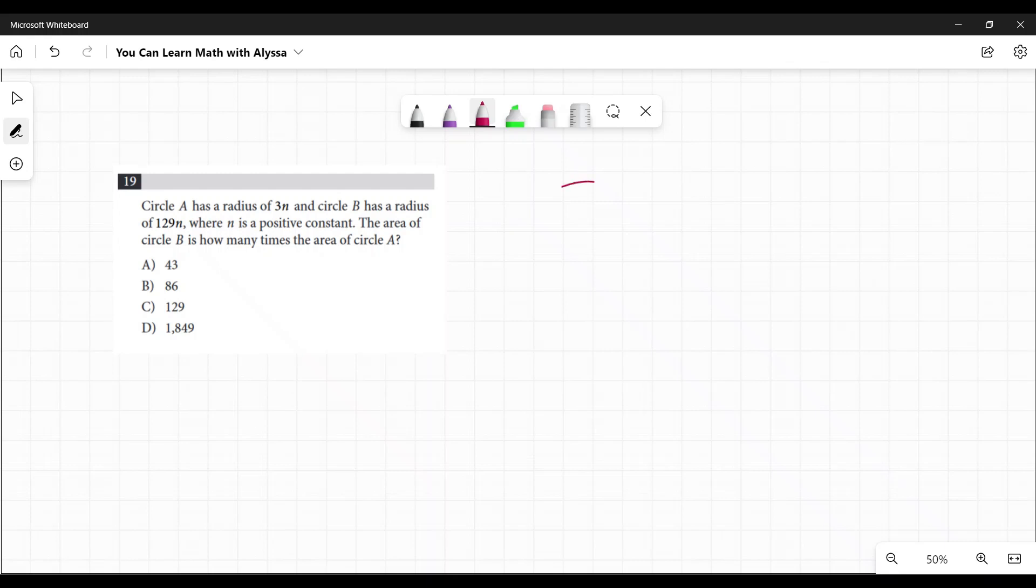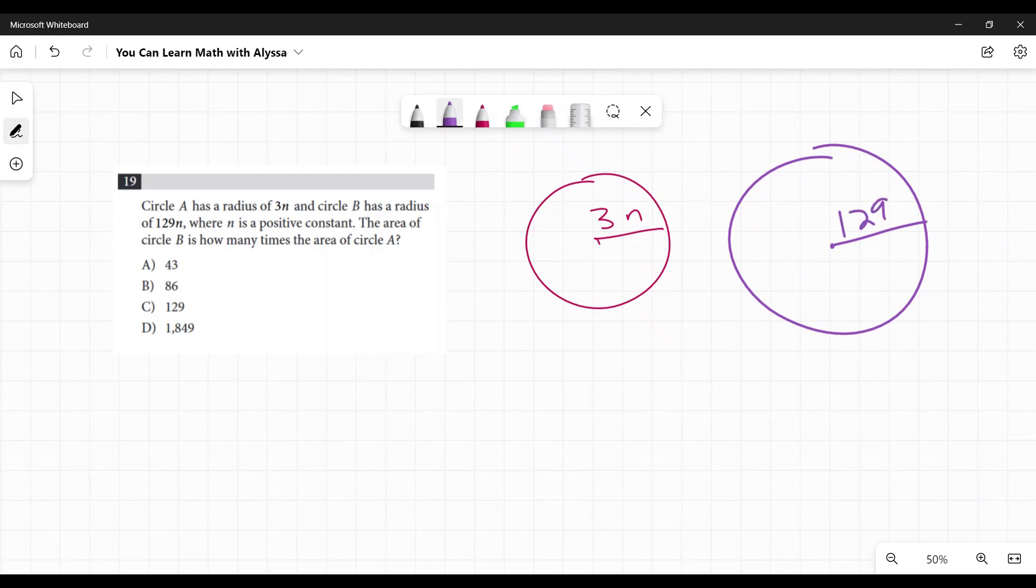A couple ways you can look at this. First, I have this circle. It has a radius of 3n. And I have this other circle. I am not drawing that to scale. It has a radius of 129n.